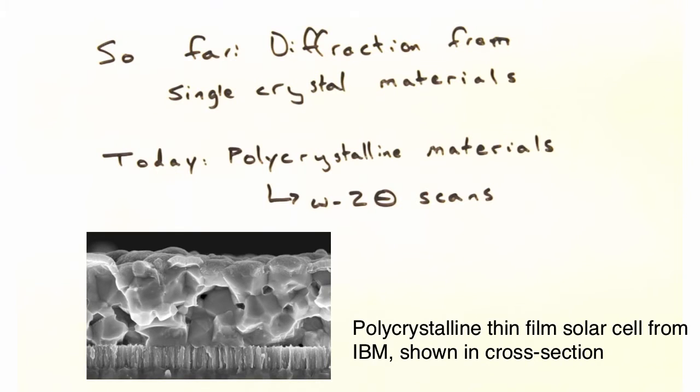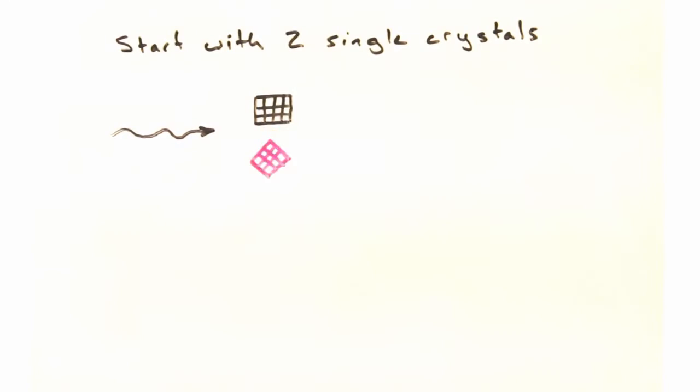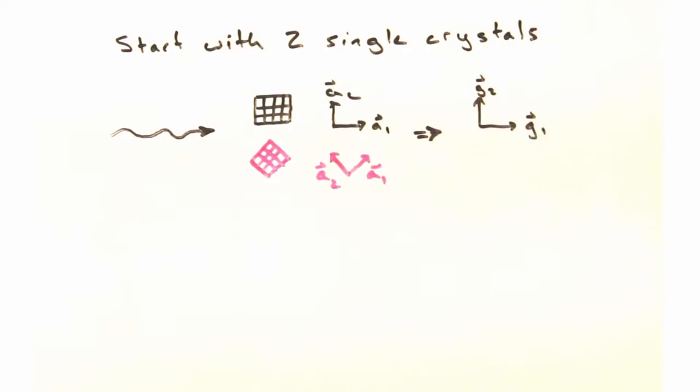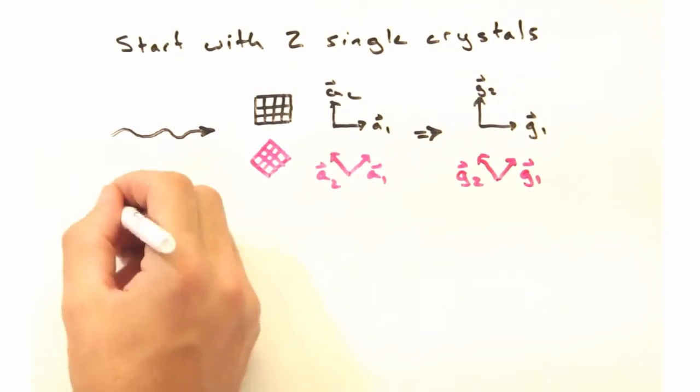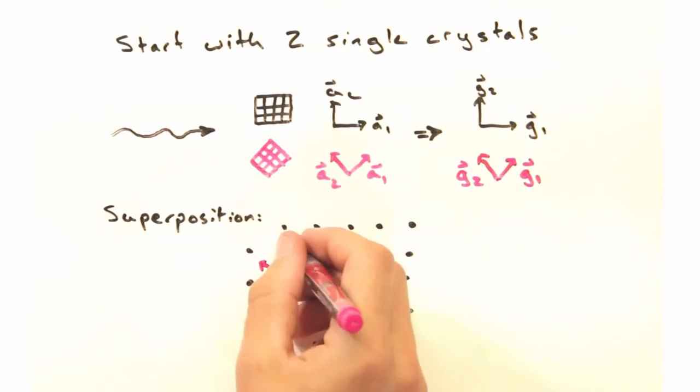Before considering thousands of individual grains, let's start with two single crystals that are both illuminated by the source beam. Because an incoming wave interacts with each crystal at the same time, we can treat the reciprocal lattice as a superposition of each grain's individual reciprocal lattices.